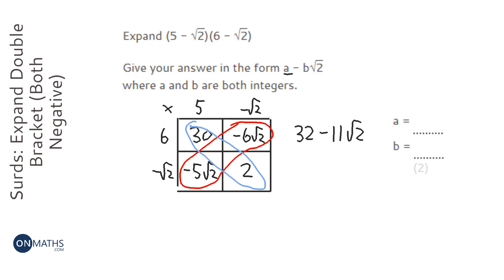So A will be 32, and B will be 11. It's 11 because there's a minus already before B, but normally with these kind of questions, they'll accept minus 11 because you didn't quite see the negative was already there.